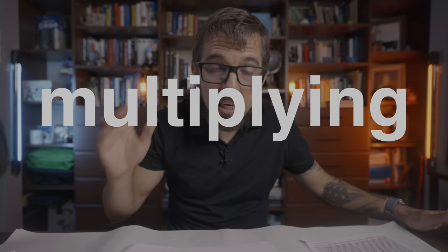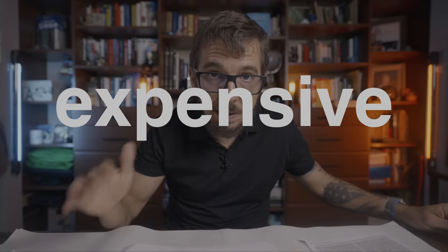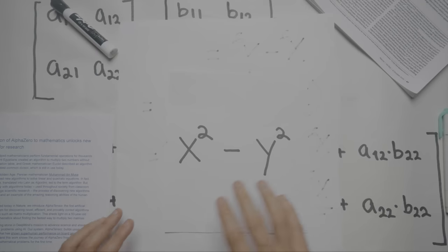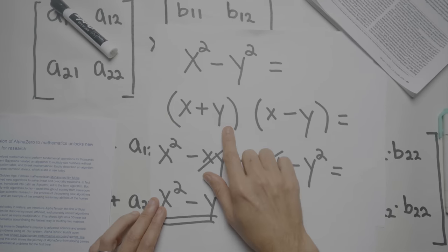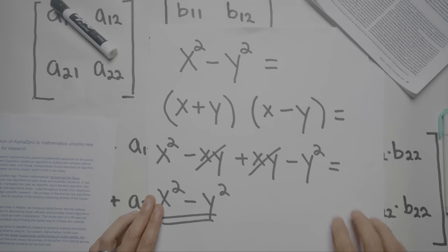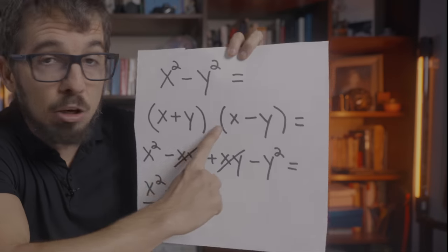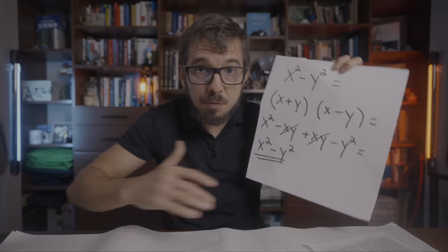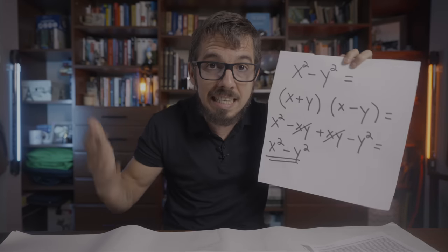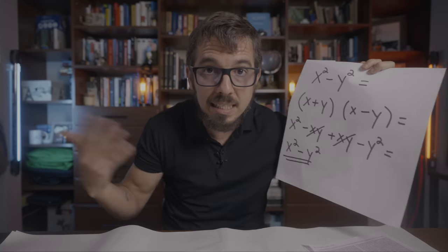I want you to imagine just for one second that multiplying numbers is very expensive. So the fewer times we do it, the faster we can actually solve a problem. Fortunately, high school algebra has a trick for us. This equation is the same as x plus y times x minus y. But now, instead of two, we have a single multiplication. We wrote a slightly different equation that gives us the same result, but we can now execute faster.